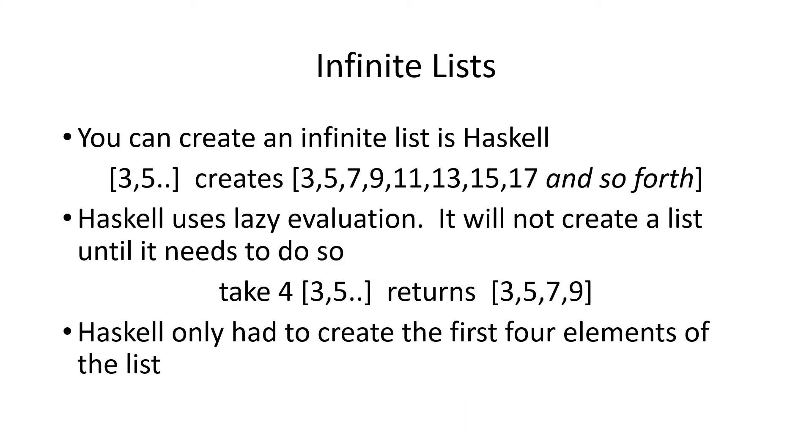Sometimes when you create a list, you want to have all the elements that you might possibly use. You can create an infinite list by leaving off the end of the range. In this example, we have bracket 3 comma 5 dot dot bracket with no end number. And that creates a list going up by 2s, 3, 5, 7, all the way up to an infinite number of values.